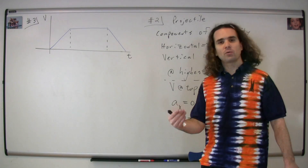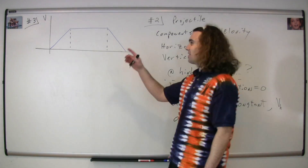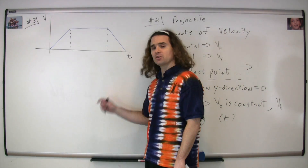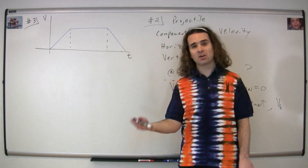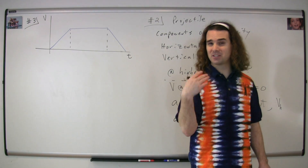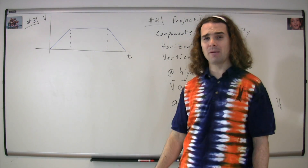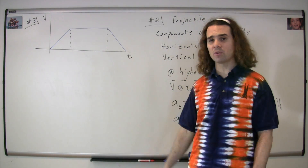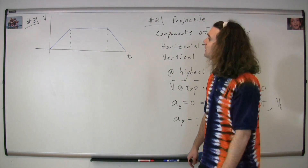Question number three: we're given a velocity as a function of time graph, and our goal is to figure out the position as a function of time graph associated with this motion.